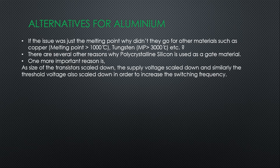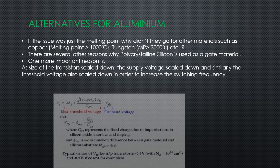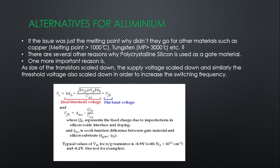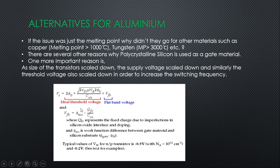The threshold voltage needs to be reduced. Looking at the threshold voltage equation, we have 2φB plus remaining terms, and the flat band voltage V_FB equals φ_ms minus φ_FC divided by C_ox, where φ_FC represents fixed charge due to the silicon oxide interface and doping, and φ_ms is the work function difference between the gate material and the silicon substrate.